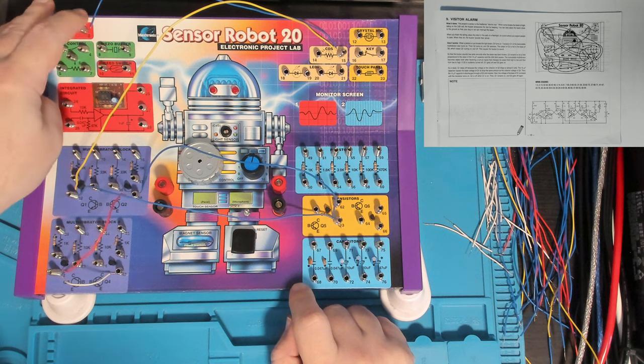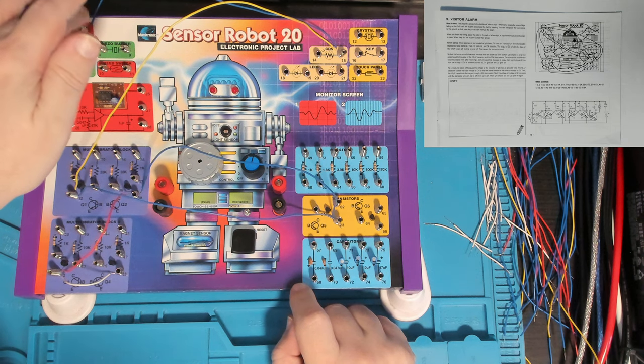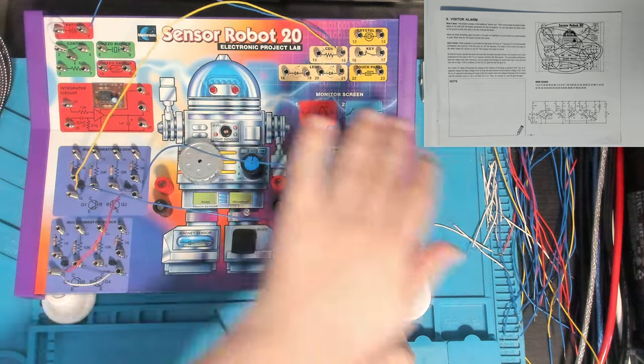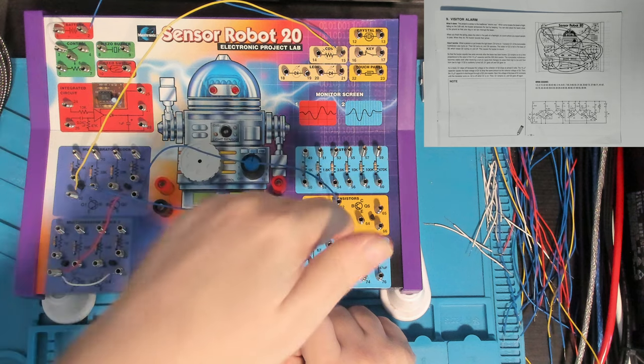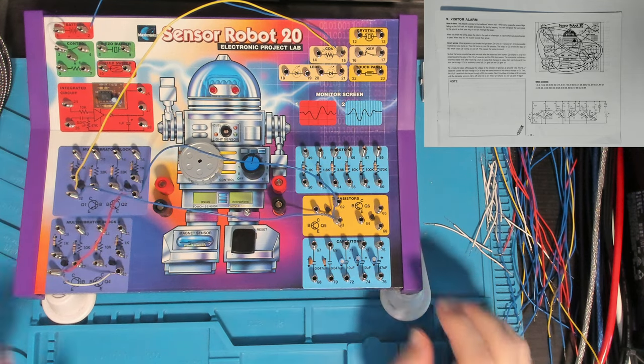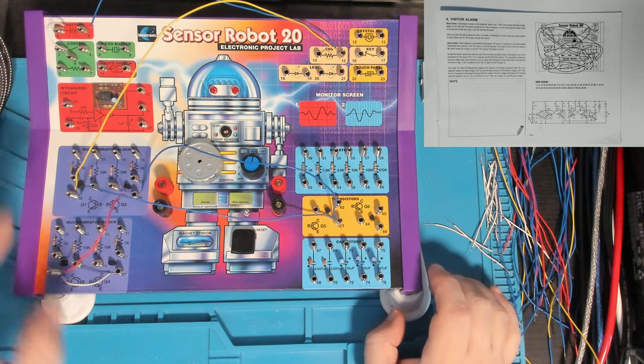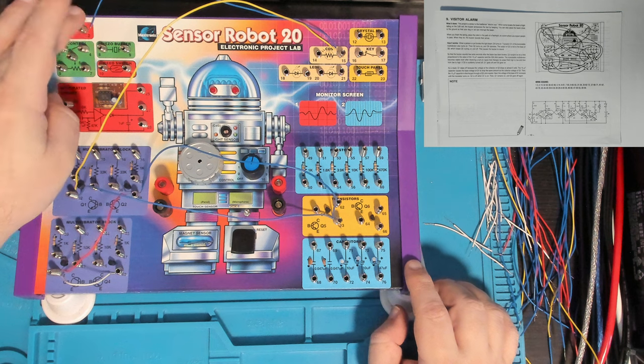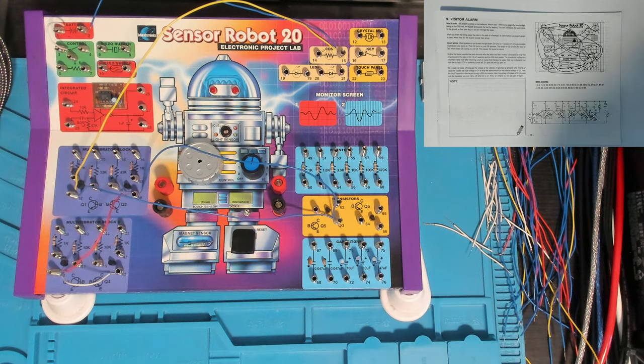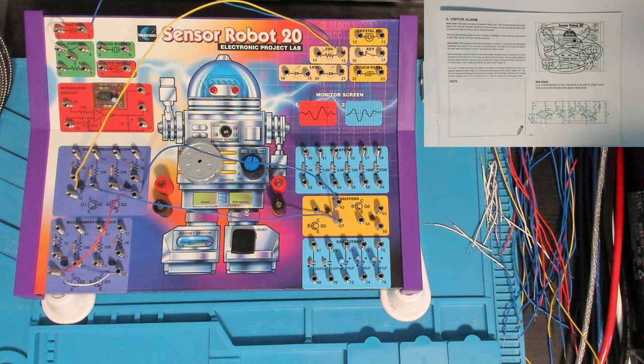Number two is ground, the negative terminal of the power supply, and it's connected to the CDS cell. All of the emitters are tied to ground. I confused myself thinking this was positive. So far so good.